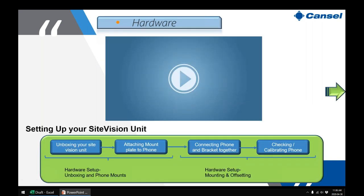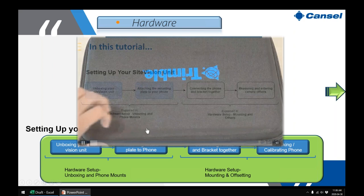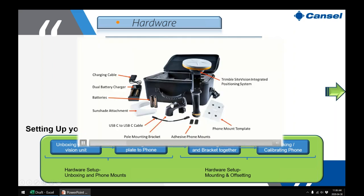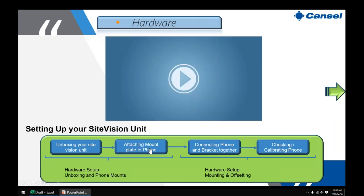We'll look at the unboxing method and how simple it is to attach all the hardware together and calibrate it. Inside the box we have the Trimble SiteVision integrated position system, a mounting apparatus for the pole, a USB cable that transfers data from the sensory device to your phone, a shade cap, and a mounting apparatus that sticks to the back of your phone.